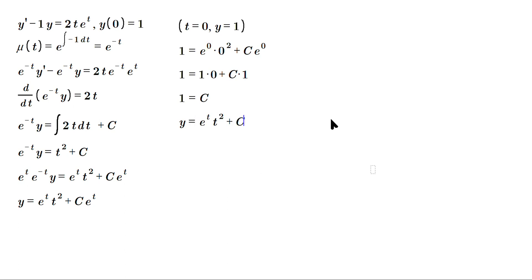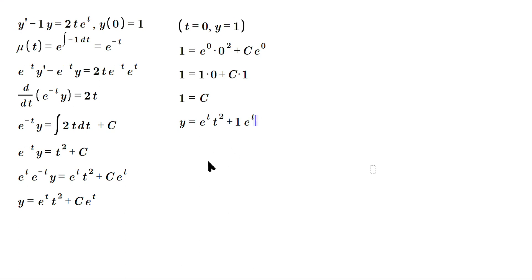Our final equation is y equals e^t·t² plus c·e^t, and since c equals 1, the particular solution is y = t²·e^t + e^t. You can verify this: find the derivative, subtract the original function, and it will leave 2te^t.